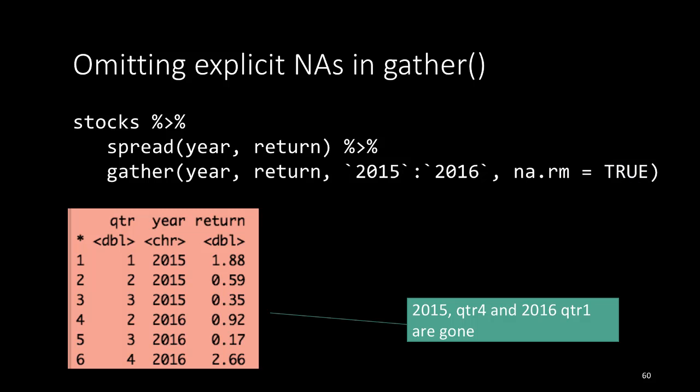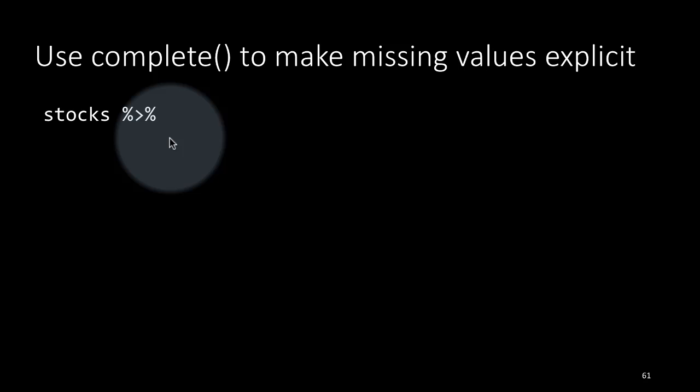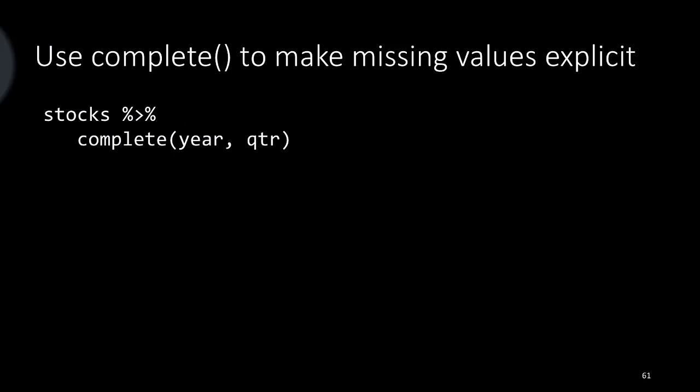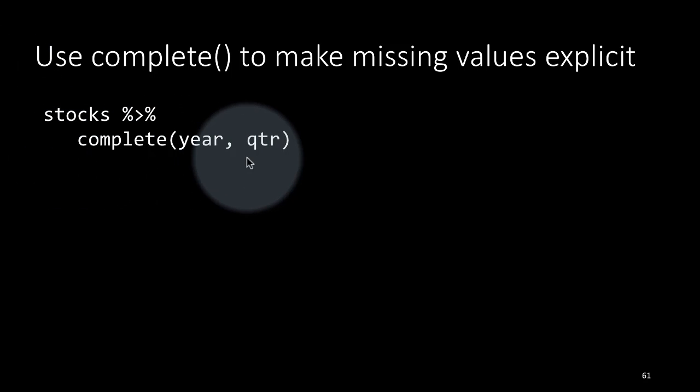Earlier we saw the missing values come to light when we use the spread function. There's another thing you can also do to make the missing values become explicit by using the complete function. We took the stocks table—remember that's the one in which the fourth quarter of 2015 is an explicit NA and the first quarter of 2016 is an implicit NA.